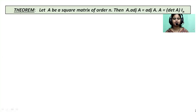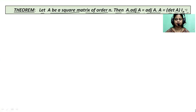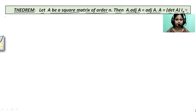Good morning everyone. Today's theorem is: let A be a square matrix of order n, then A into adjoint A equals adjoint A into A equals determinant of A into I_n, that is the identity matrix of order n. This is a very important theorem of adjoint, and let's prove this theorem.